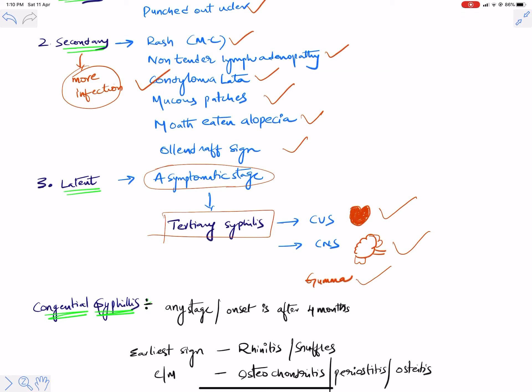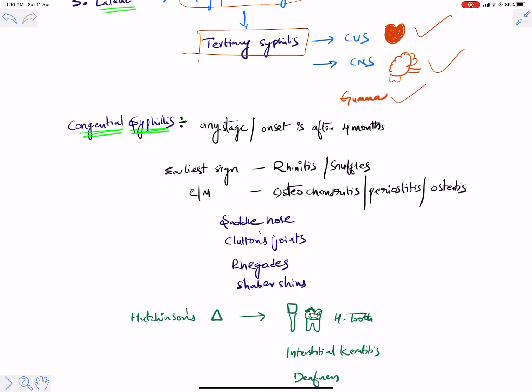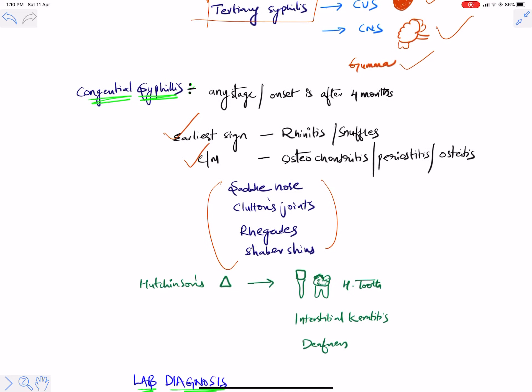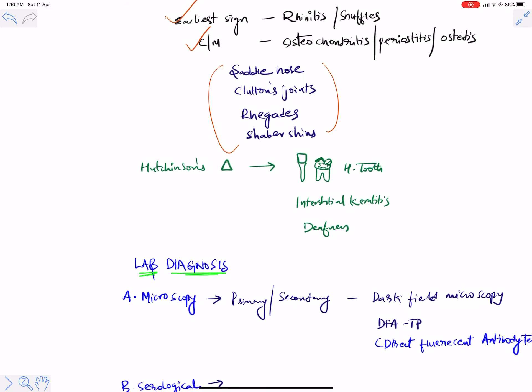The lesion in tertiary syphilis is gumma, seen on the palate. It is very difficult to isolate organisms from these lesions — culturing the organism in tertiary syphilis is very difficult. Congenital syphilis can occur at any stage of pregnancy but most commonly starts after the fourth month. Note the earliest sign and most common manifestations of congenital syphilis.